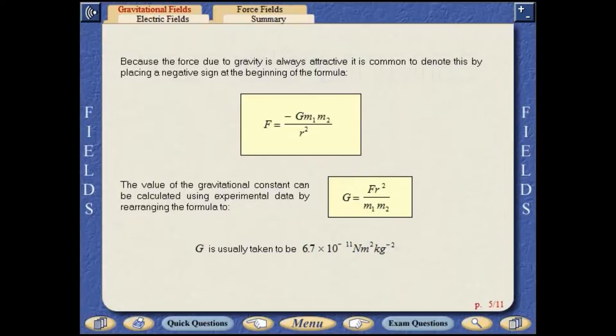Because the force due to gravity is always attractive, it is common to denote this by placing a negative sign at the beginning of the formula. The value of the gravitational constant can be calculated using experimental data by rearranging the formula.